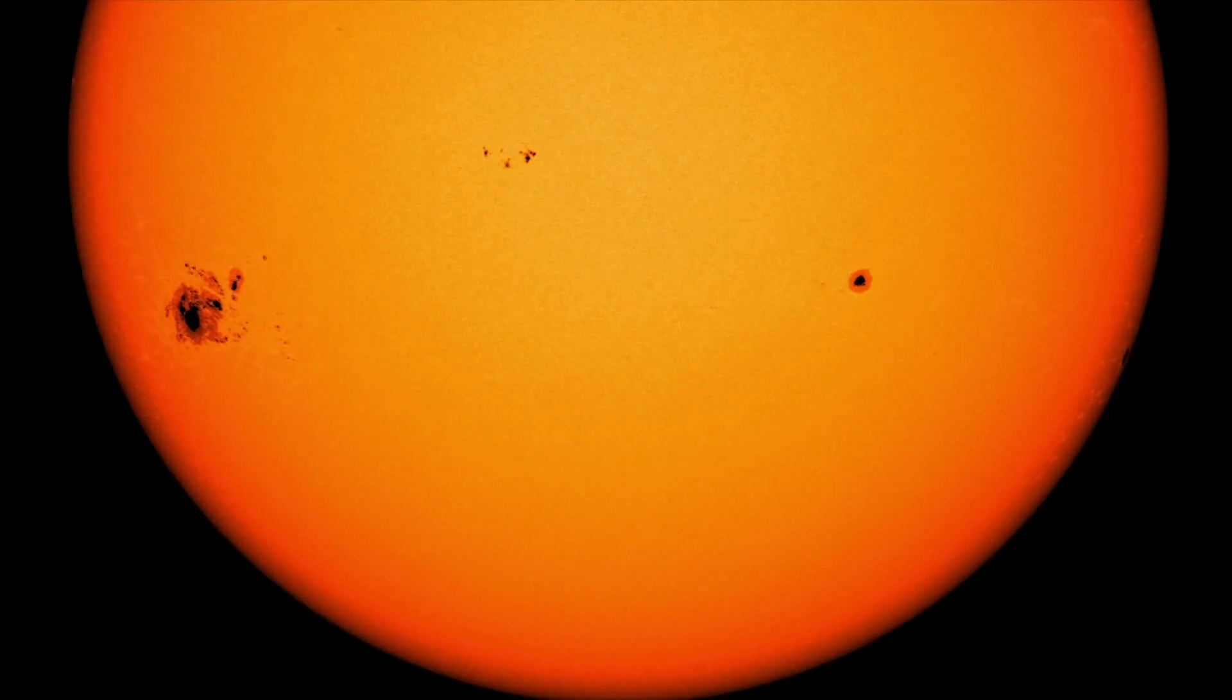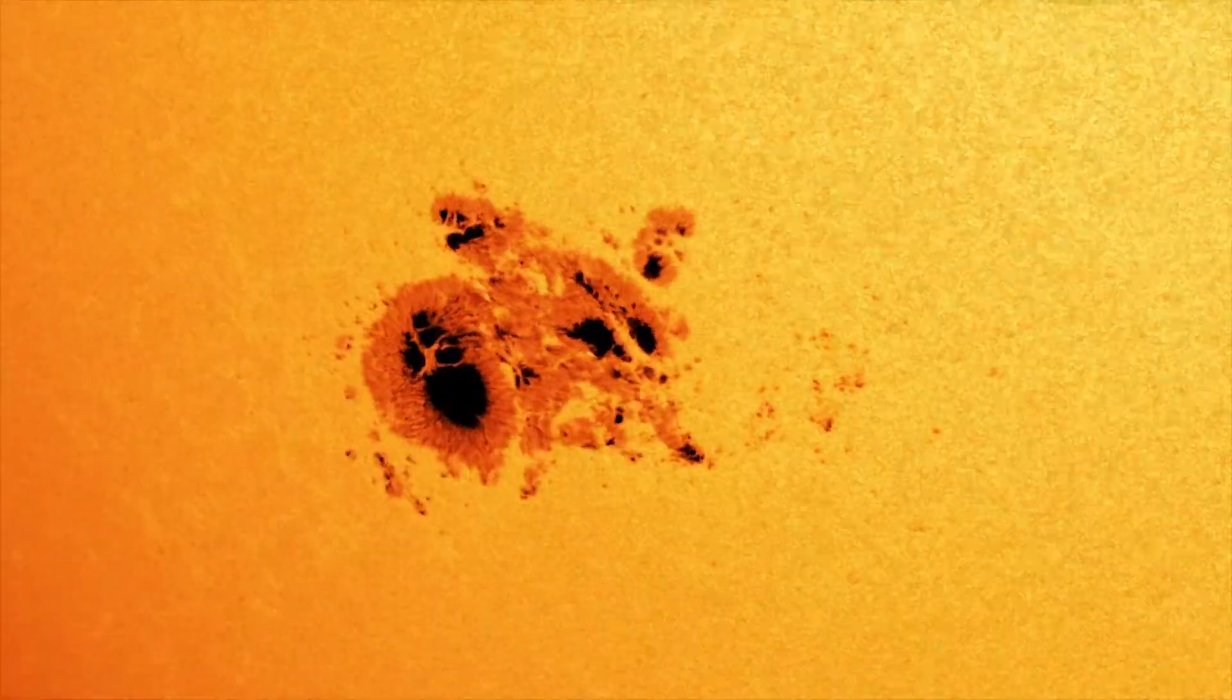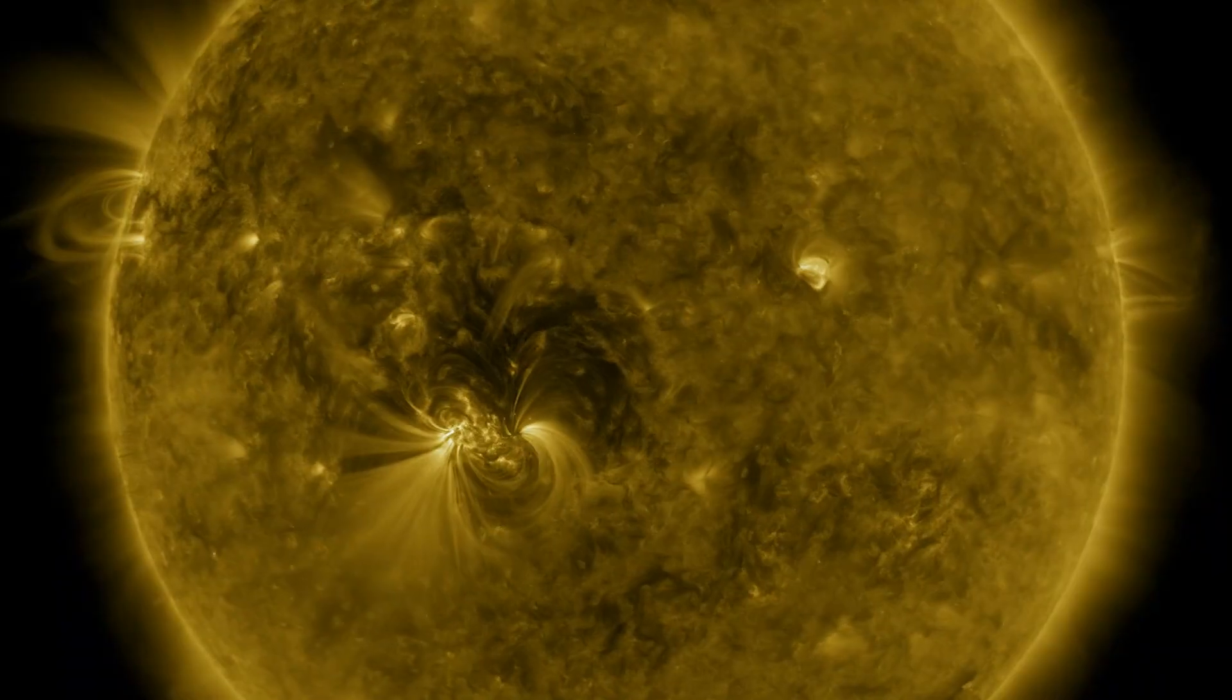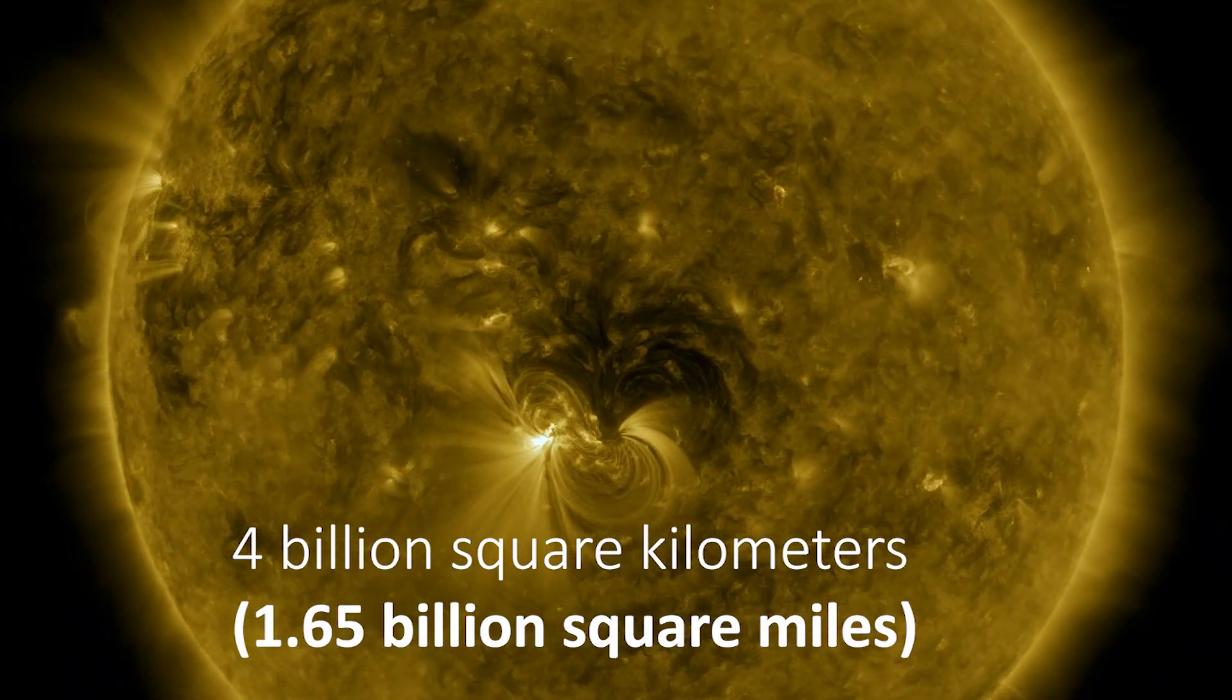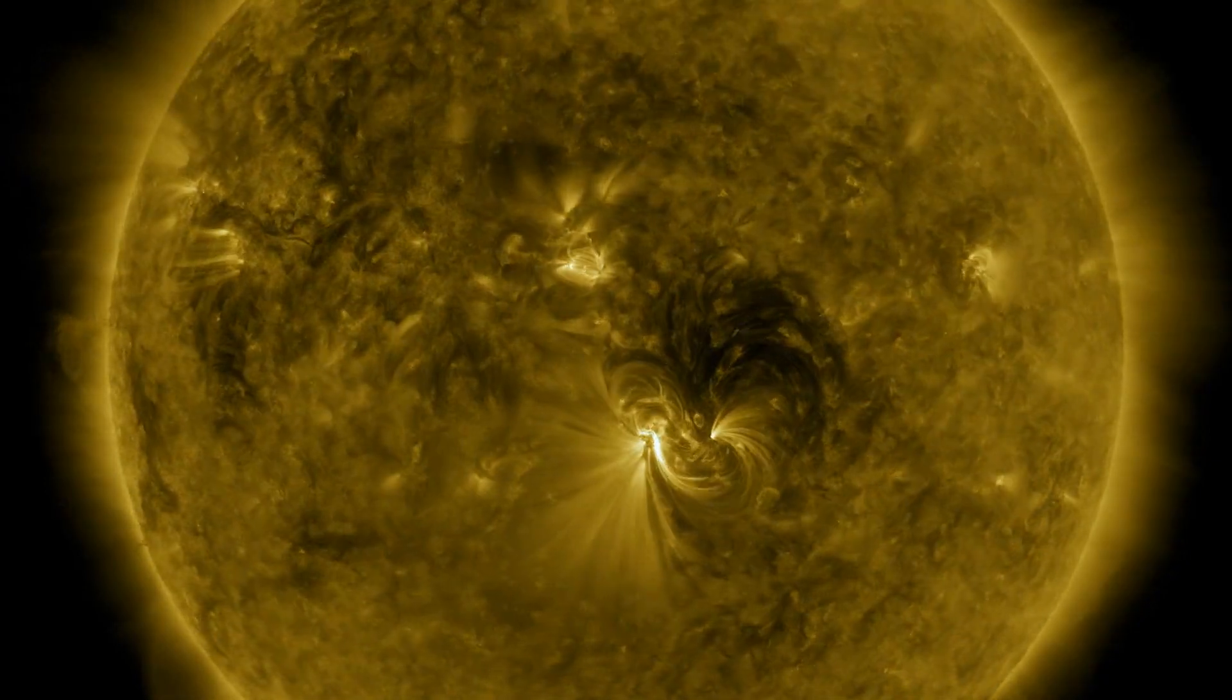One spotted in 2014, known as active region 12192, was the largest seen for 24 years. It covered a region about 4 billion square kilometers, almost the same size as Jupiter. Sunspots are actually fairly bright, but they appear dark because the rest of the Sun is so much brighter.